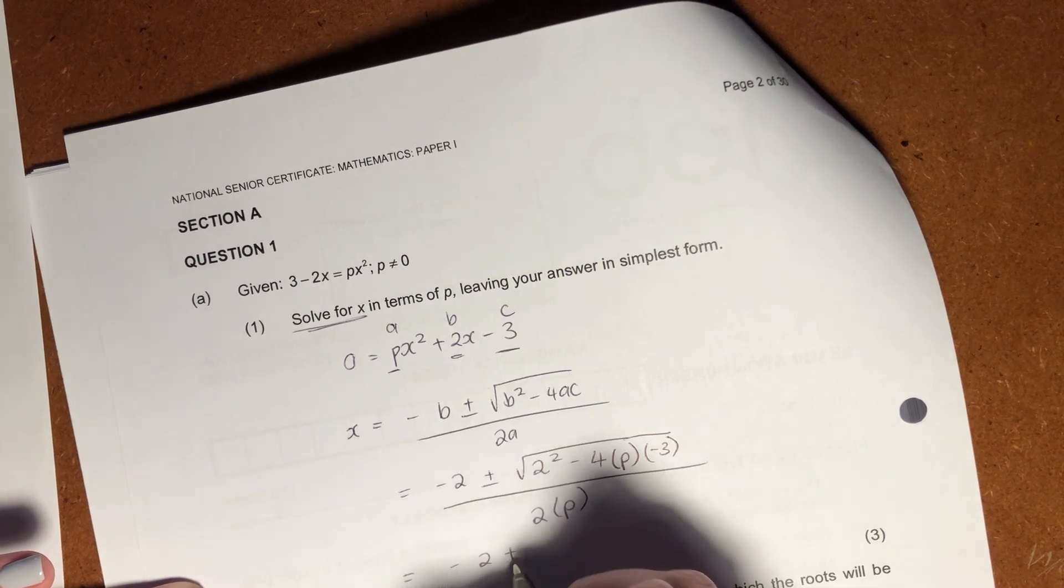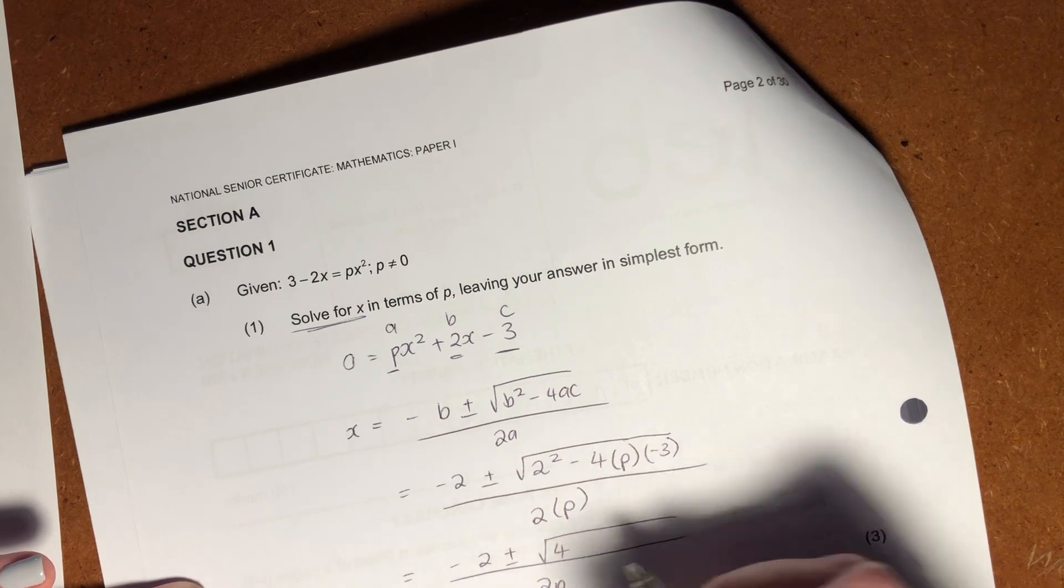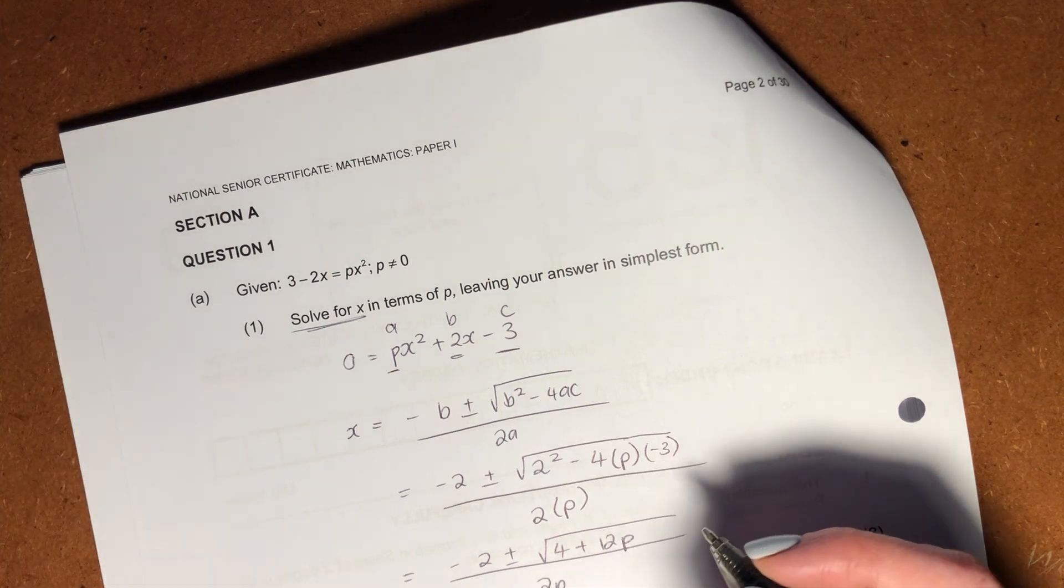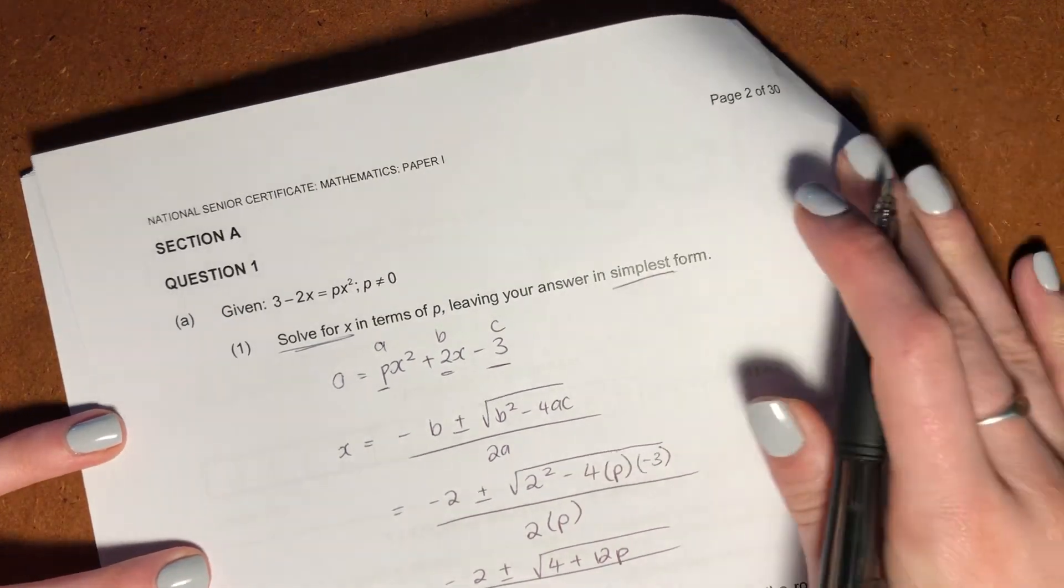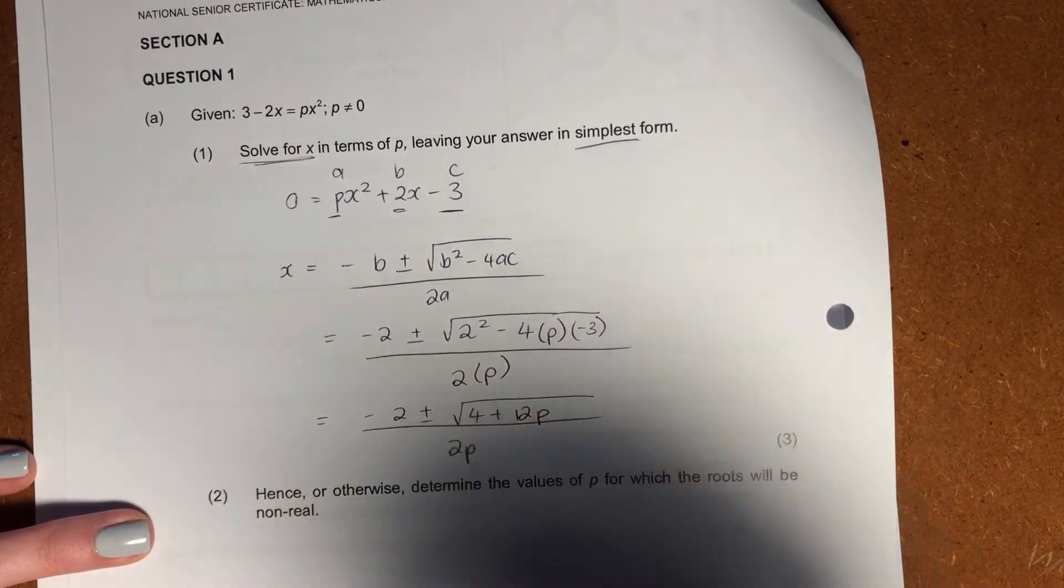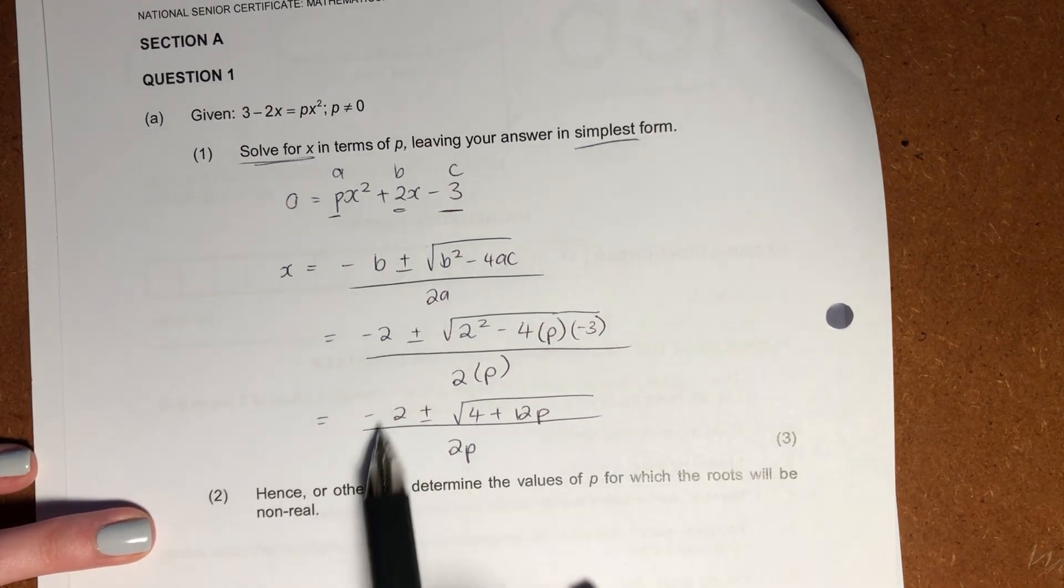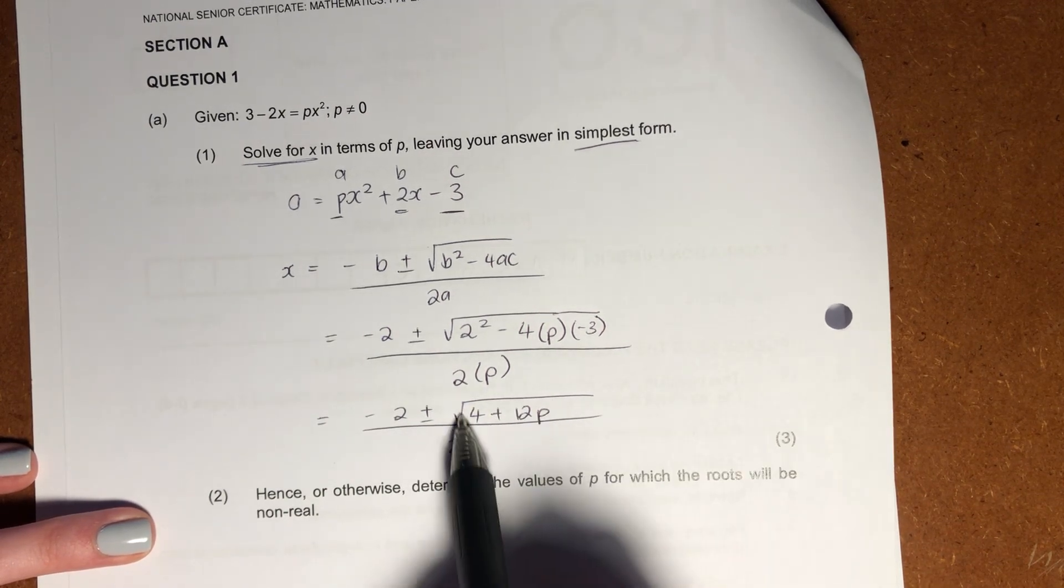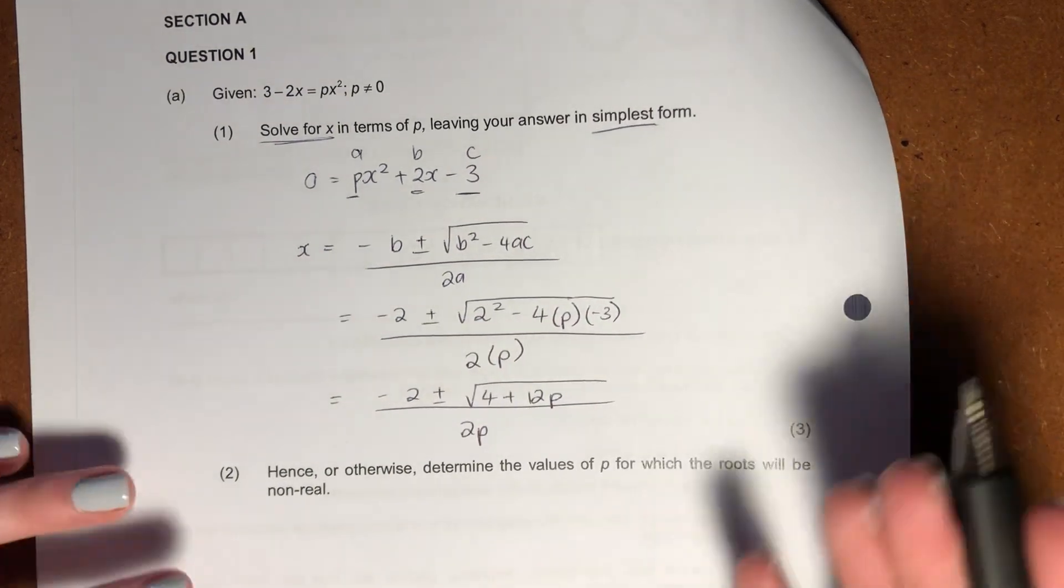Let's just go and simplify all of this and we get negative 2 plus minus square root of 4 plus 12p over 2p. Now what we should do in these cases is it did say in simplest form, so let me just make sure you can see that. When it says simplest form, generally it means you should do some form of factorization. You should see here that all these terms kind of have a factor which we can take out. We know that the factor that we take out under the square root is going to be different to the factor we take out there. But let's think about it.